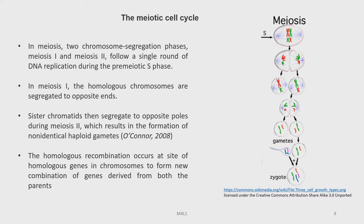In meiosis 1, the homologous chromosomes are segregated to opposite ends. Sister chromatids then segregate to opposite poles during meiosis 2, which results in the formation of non-identical haploid gametes. Homologous recombination occurs at sites of homologous genes in chromosomes to form new combinations of genes derived from both parents.